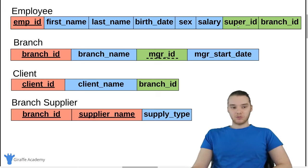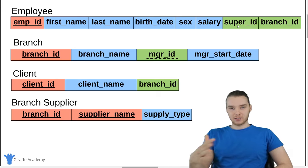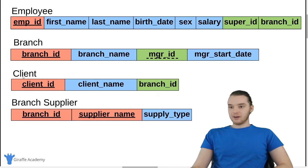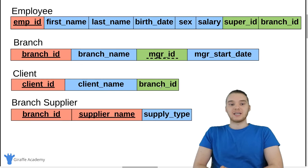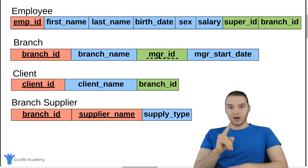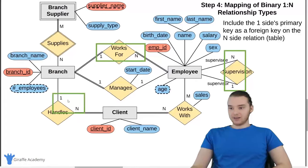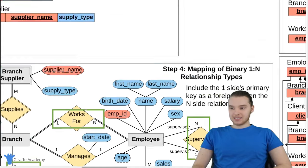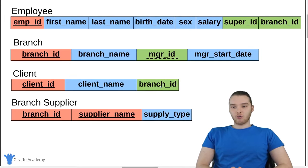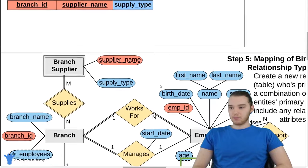The same goes for the supervisor ID — it's pointing to the employee table, so we have to store it on the employee table. Then down here in the client table, we stored the branch ID as a foreign key, because the branch was on the one side of that cardinality relationship — branch is on the one side and the client was on the n-side. That's why we stored branch ID as a foreign key on the client table.